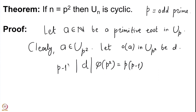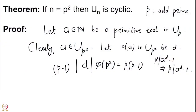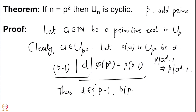Also, p-1 will divide d. The reason is that if a^d - 1 is divisible by p², then p also divides a^d - 1, and since we started with a primitive root in U(p), the order of a in U(p) is p-1. So p-1 must divide d, and d must divide p(p-1). The possibilities for d are therefore p-1 and p(p-1). There are no other multiples of p-1 that also divide p(p-1), and this is where we use that p is prime. If we show that the order d cannot be p-1, then we are done.